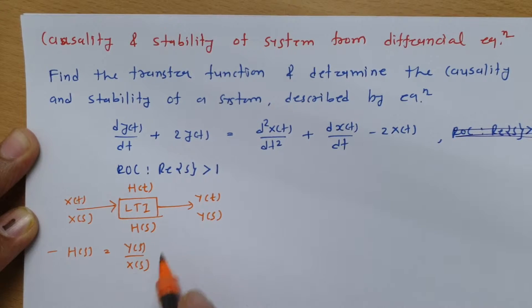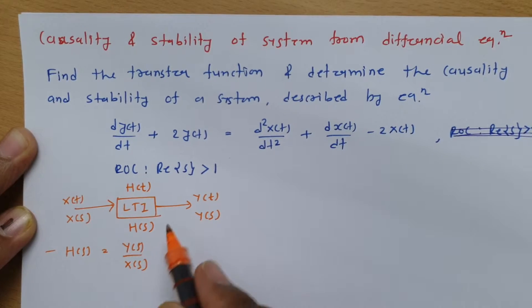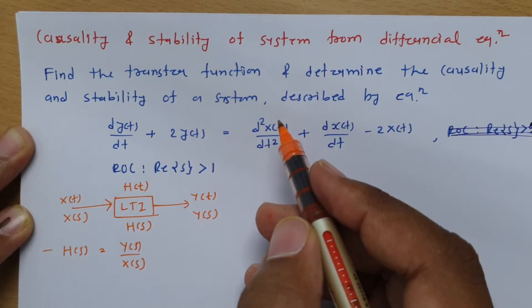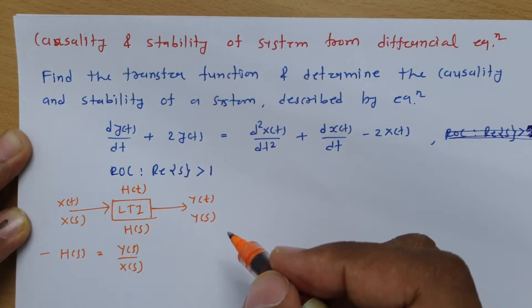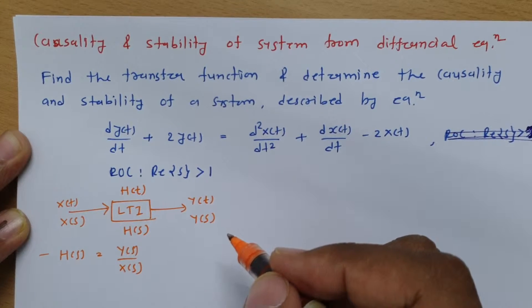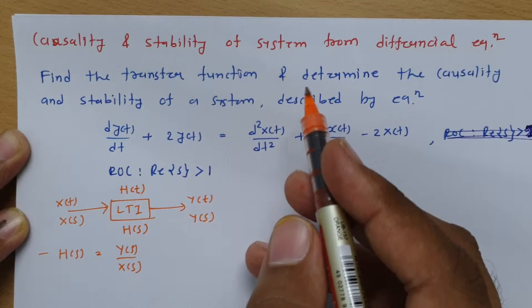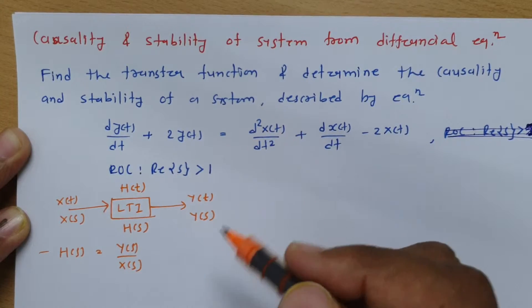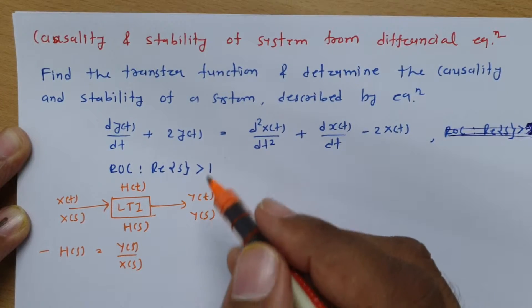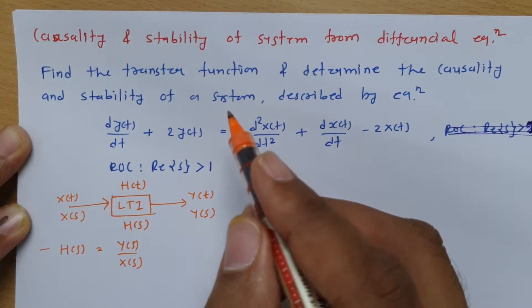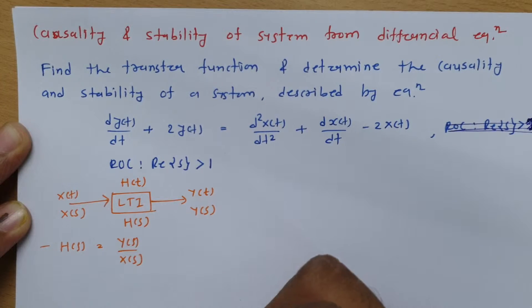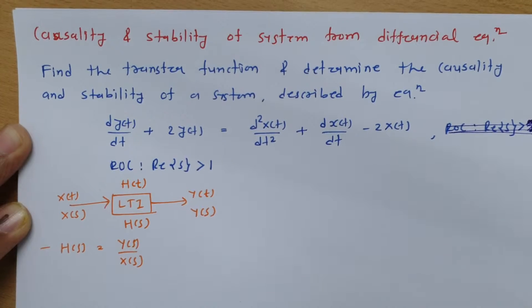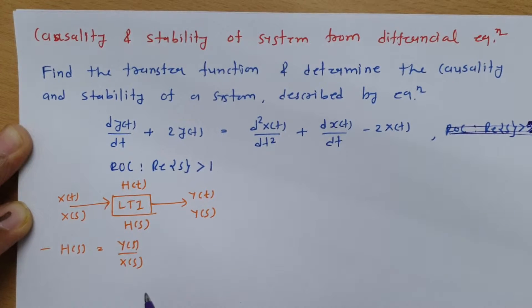Based on the transfer function, we can find the position of poles, and that position of poles will justify whether the given system is causal or stable. Both causality and stability can be checked based on the transfer function. So the first agenda is to identify the transfer function.